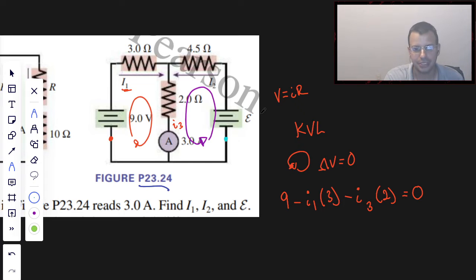And I just tend to be a positive person in general, so that's why I try to draw my loop in the direction of the actual current. But if you're wrong, it doesn't matter, not a big deal. So start here, jump across the battery, gives us epsilon, minus I2 times 4.5 minus I3 times 2, and that's going to equal zero.